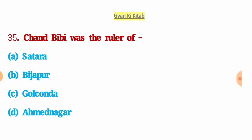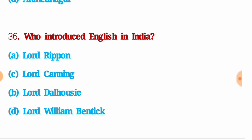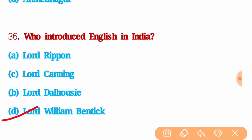Next question: Chand Bibi was the ruler of — the right answer is option D: Ahmadnagar. Next question: who introduced English in India? The right answer is option D: Lord William Bentinck.